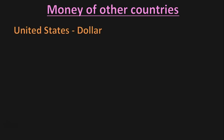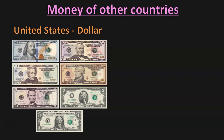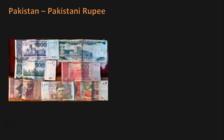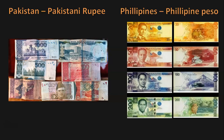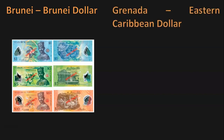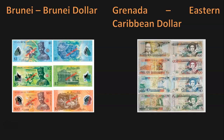Let us see some of the money used in other countries. The United States uses the Dollar. The European Union uses the Euro. Pakistan uses the Pakistani Rupee. The Philippines uses the Philippine Peso. Brunei uses the Brunei Dollar. And Grenada uses the Eastern Caribbean Dollar.